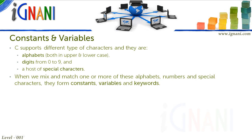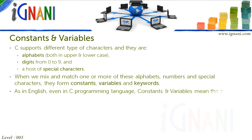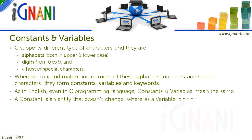This chapter covers constants and variables in detail. As in English, even in C Programming Language, constants and variables mean the same. A constant is an entity that doesn't change, whereas a variable is an entity that can change.